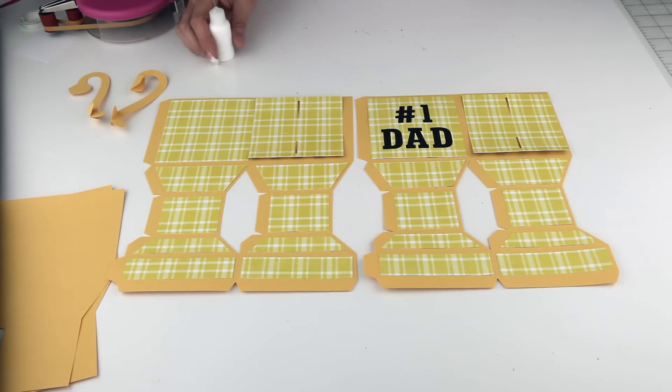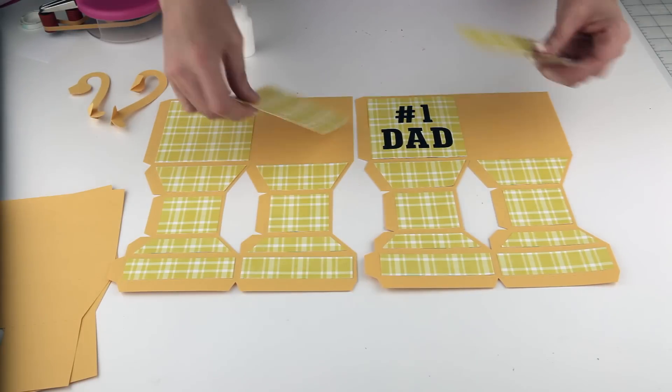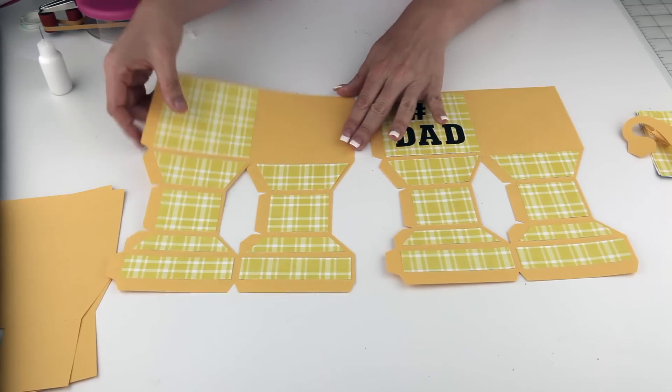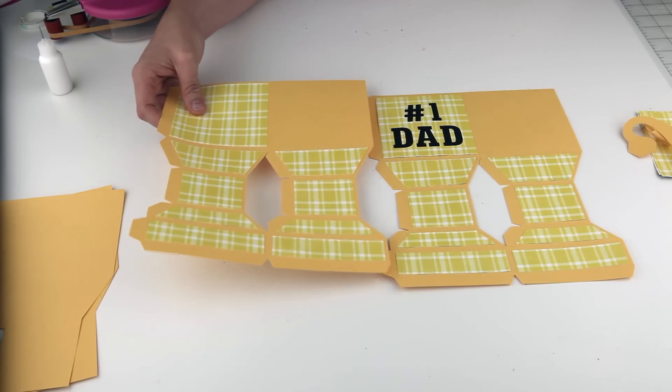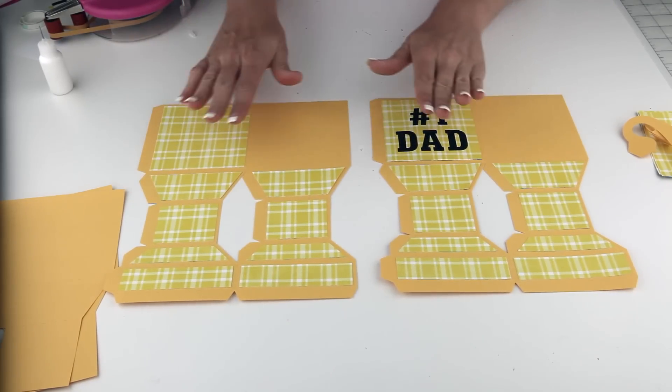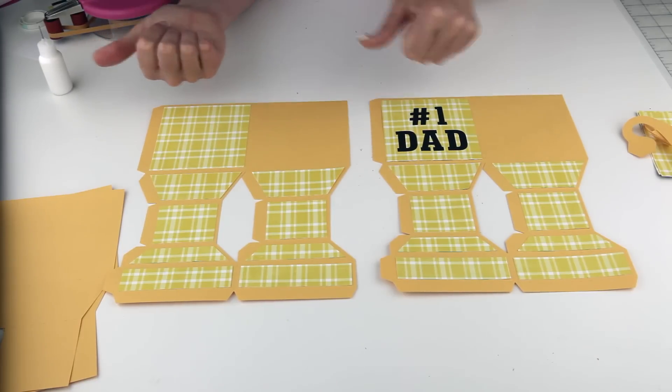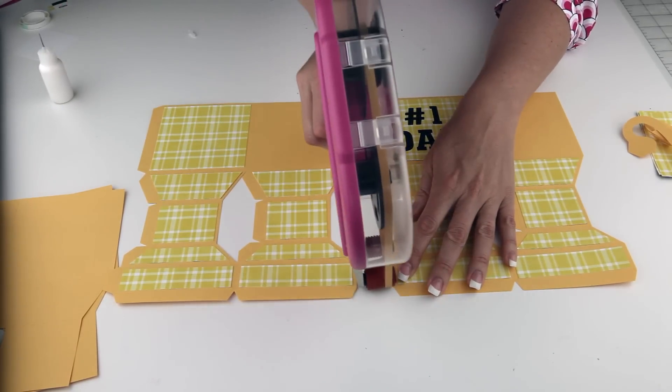So the next thing we are going to do is, let's actually wait on the handles. I am going to leave those until the end. The next thing we are going to do is adhere these pieces together at these two glue tabs. Make sure when you are installing all of your covering panels that the glue tabs are on the same side.